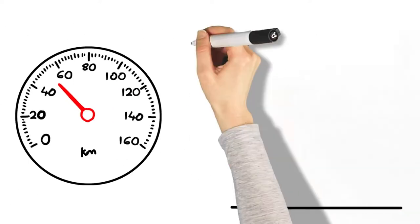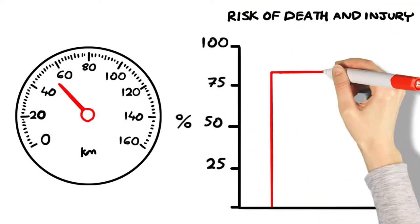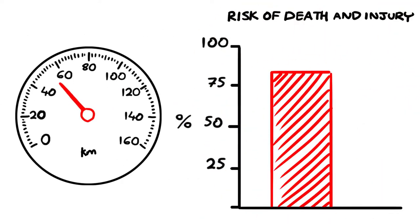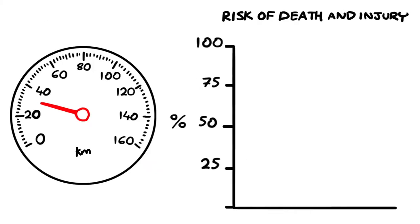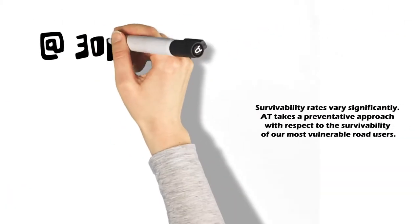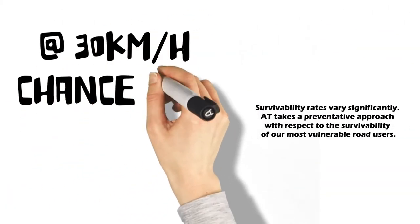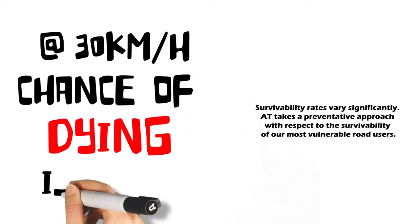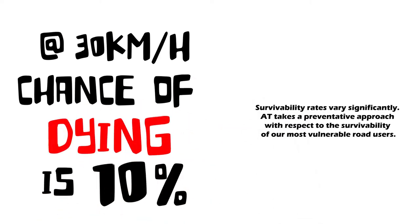If we get hit by a car at 50 kilometres an hour, the chances of us dying are four to five times higher than if we were hit at 30 kilometres an hour. If our car hits someone at 30 kilometres an hour, the chance of dying is just 10%. So safe speeds can reduce the likelihood of a crash and the potential for serious injuries.